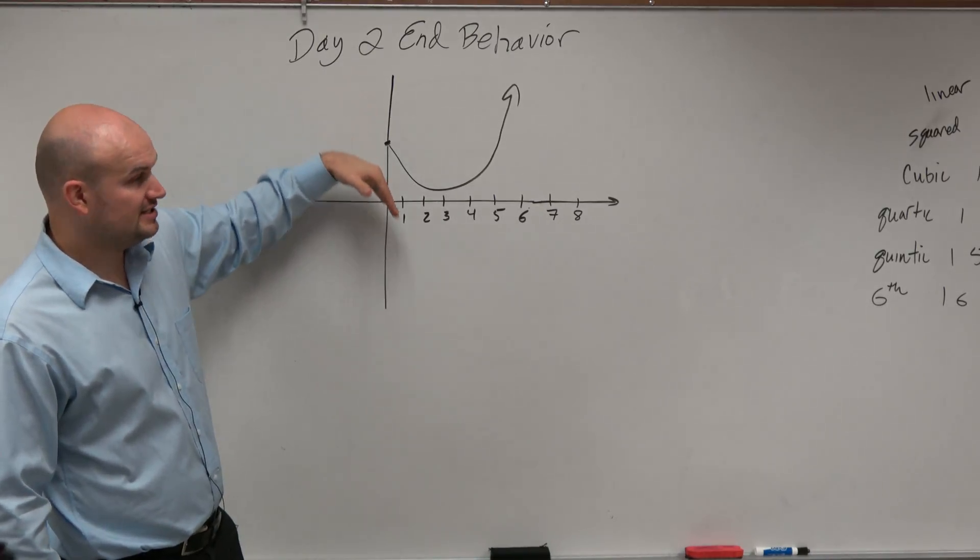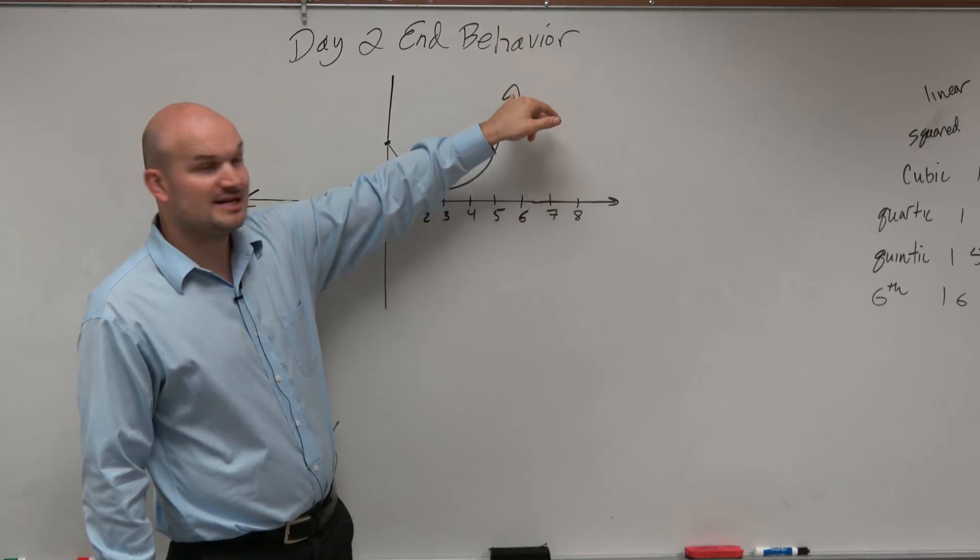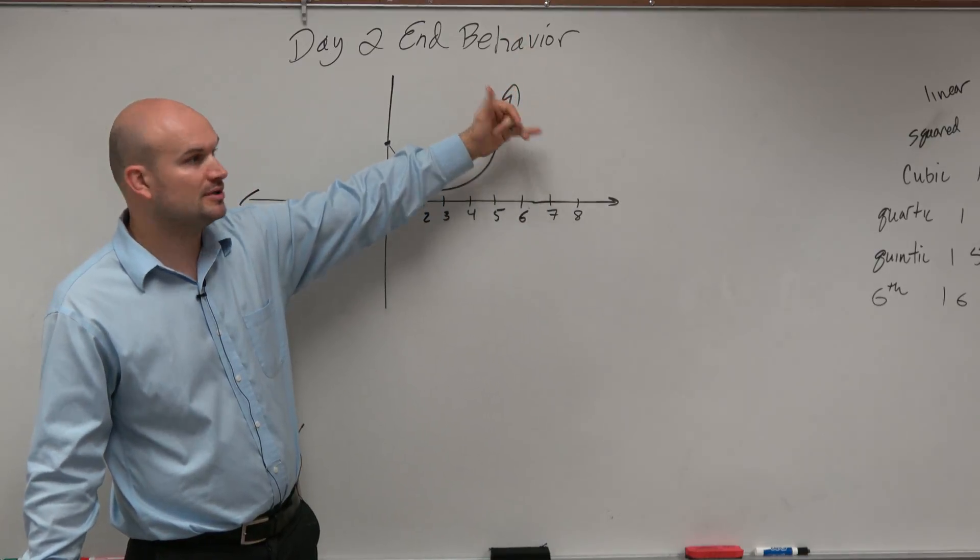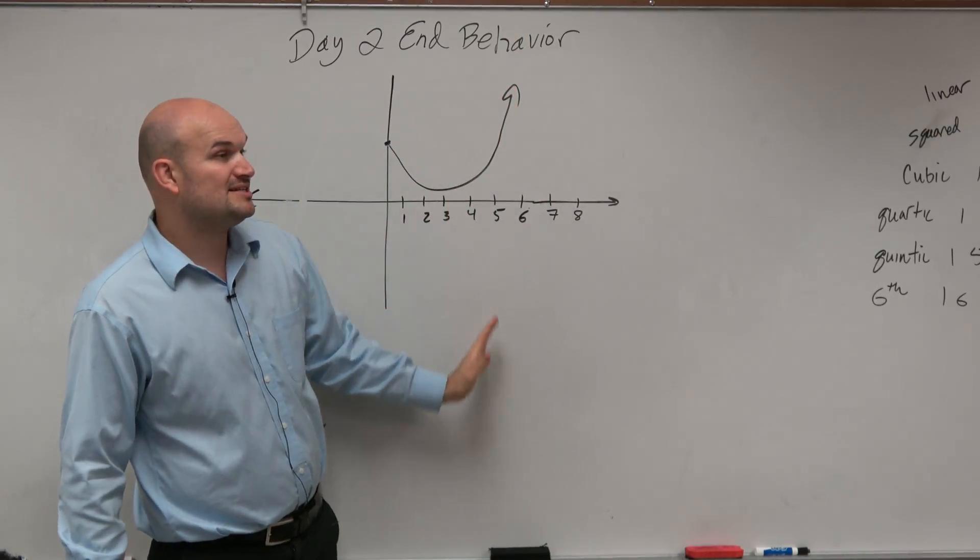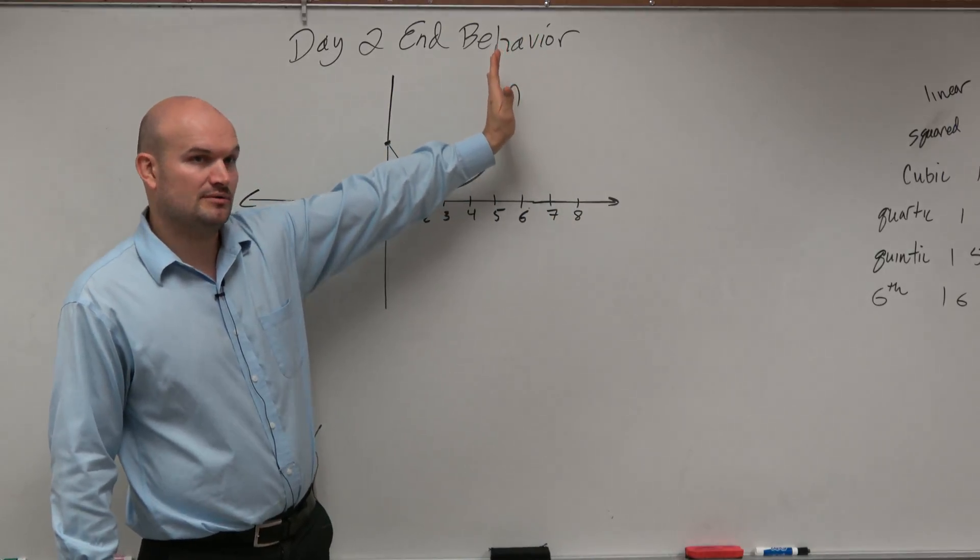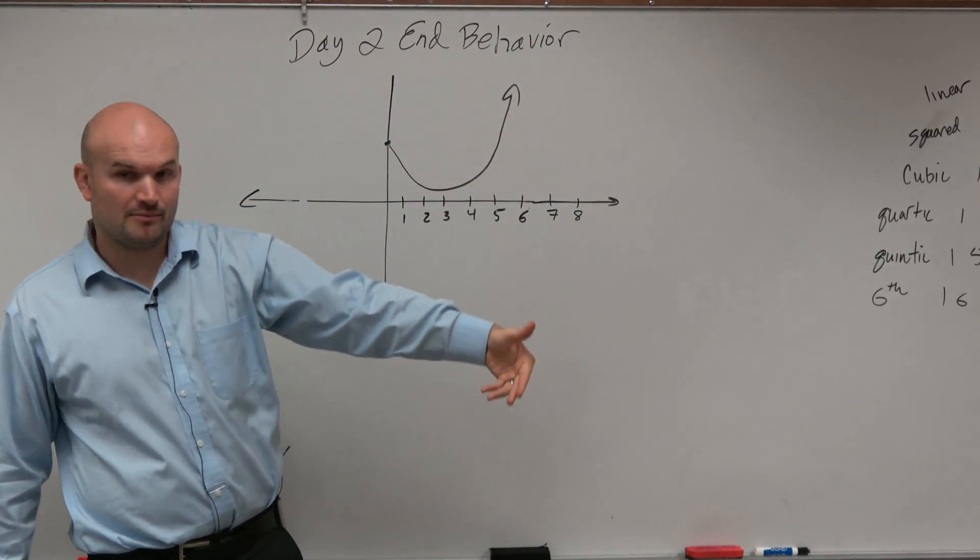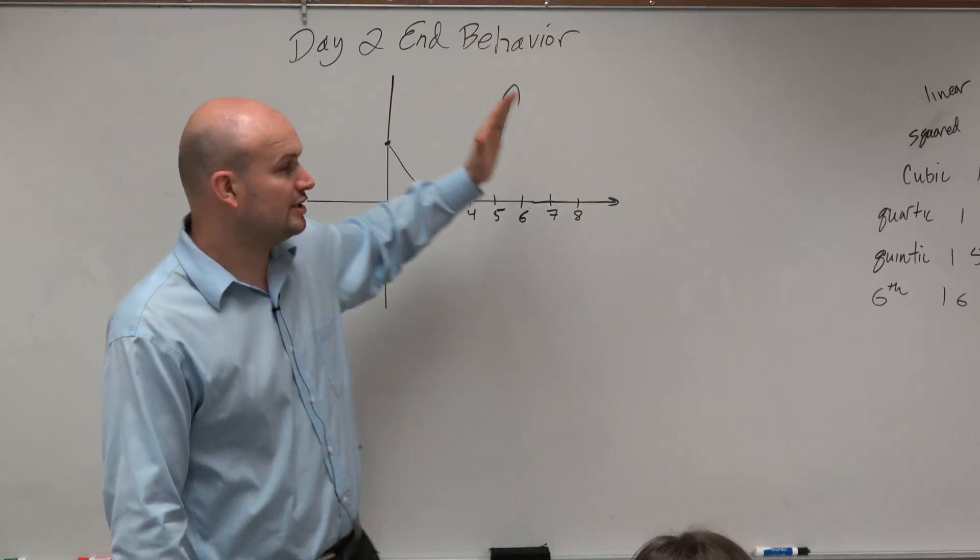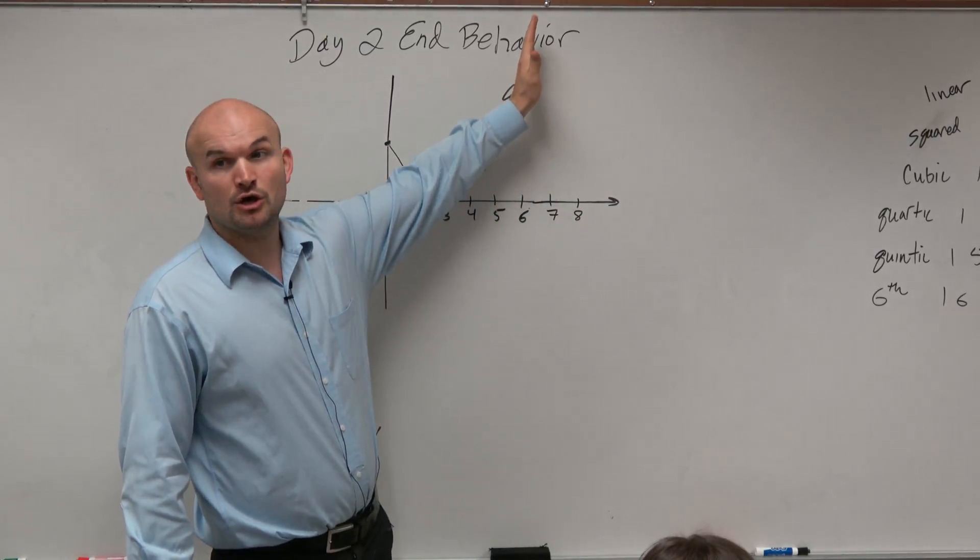However, as the graph continues to the right, you guys can see that this arrow we wrote in like algebra 1 and geometry, that means the graph is going to continue in that direction. Now there's nothing that we know that is going to change. So we are going to assume that it's going to continue going in that direction.